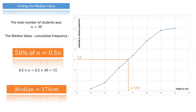What this means is that in this class of 30 students, half of them — 50% — measure less than 174 centimeters, and the other half measure more than 174 centimeters. So the median splits the class into two equal parts: the lower part measuring less than 174 centimeters and the upper part measuring more.